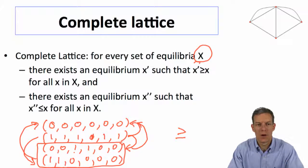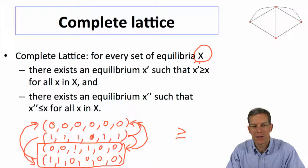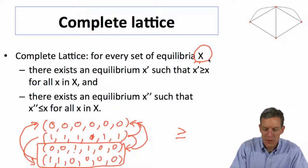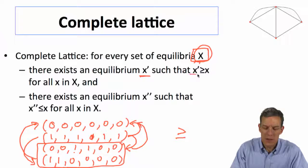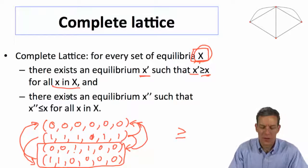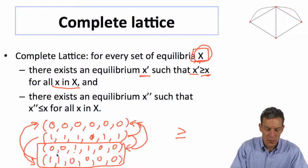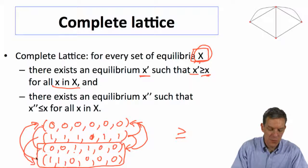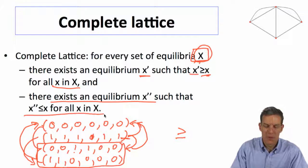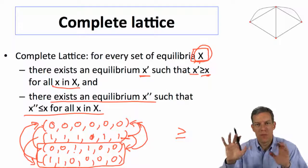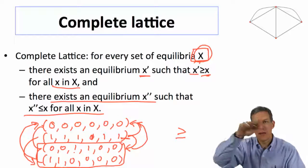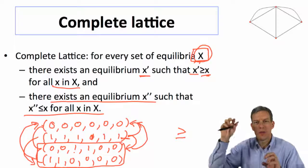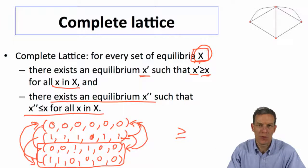We're going to be working with a space of zeros and ones. The notion of a complete lattice in terms of equilibria basically is that if we look at any set of these things, there exists some object which is at least as big as all of them in the set, and there also exists something which is smaller than any of them. Something's going to be a complete lattice if when we take any subset, we've got something at least as large and something at least as small.